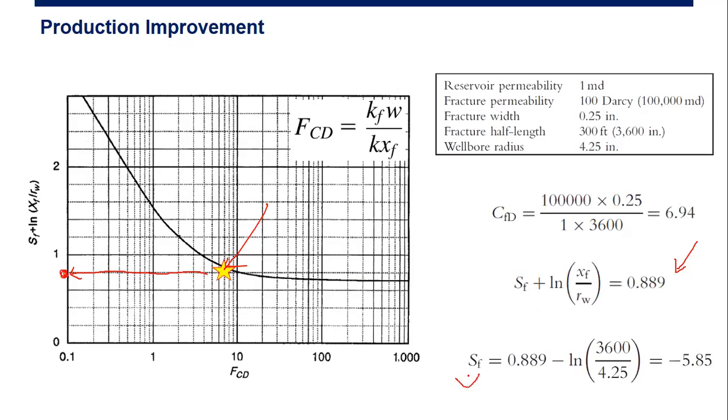By using this, so this term will go to the right, and now we can get the SF is negative 5.85. So now the skin factor because of fracturing is negative, so actually we increase the productivity, we improve the performance.